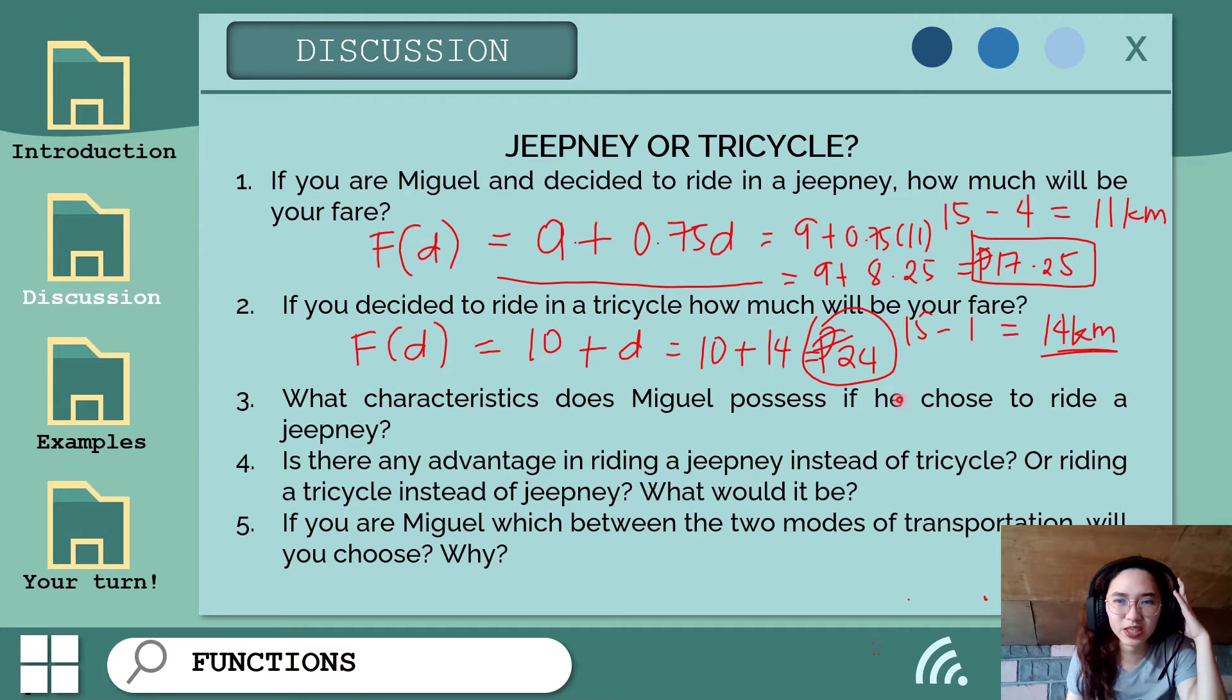When we compare the fare of jeep versus tricycle, the jeep is cheaper at 17 pesos and 25 cents, while the tricycle is 24 pesos. If Miguel chose to ride the jeepney, what characteristics does Miguel possess? Maybe he's thrifty. It's better for him to save around 7 pesos instead of riding a tricycle.